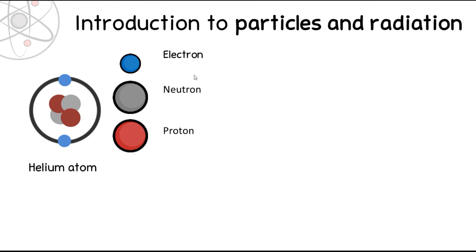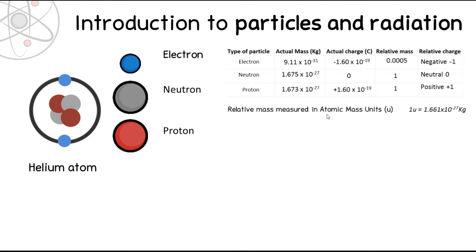For A-level physics you need to know some actual data about these subatomic particles, and I've got a table here. At first it can look a bit daunting because there are some very small values, but we've got five columns: the type of particle, the actual mass in kilograms, the actual charge in coulombs, and relative values in the last two columns.